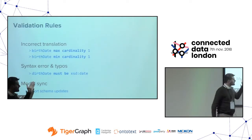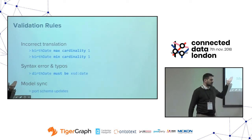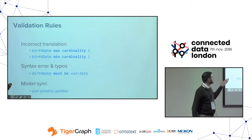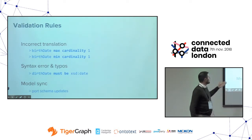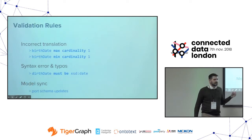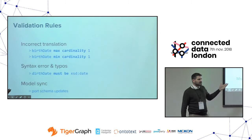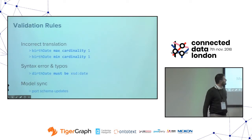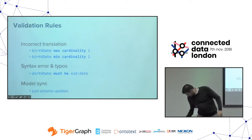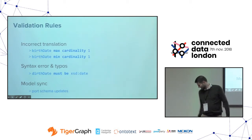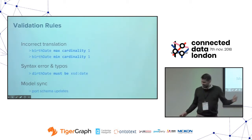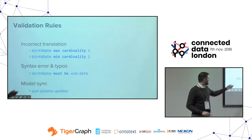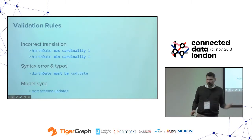Validation rules are another source of errors. If you by mistake give birth date a max cardinality of one instead of a minimum, or the other way around, you can get errors that are hard to identify. If you say birth date must be an existing date, then in the best case you get an error, in the worst case you identify it very late. And if you update your model, you need to also update the validation rules accordingly.